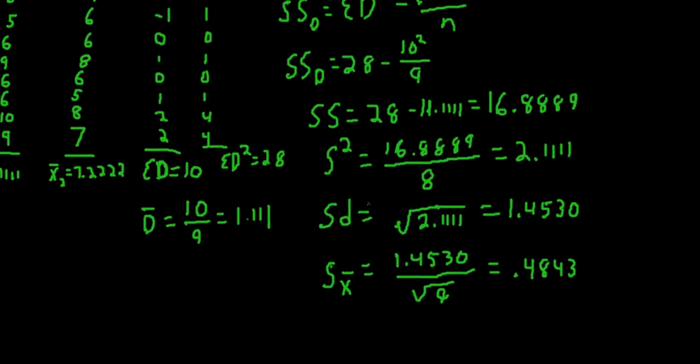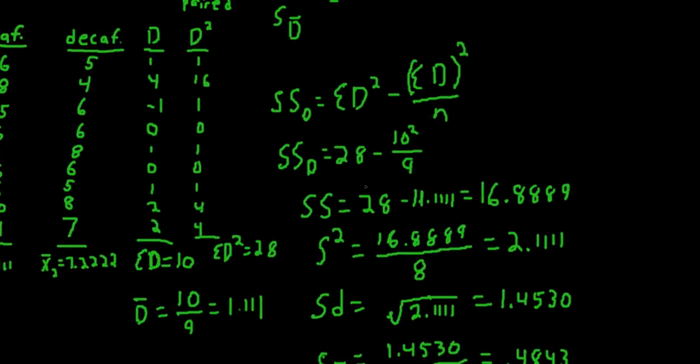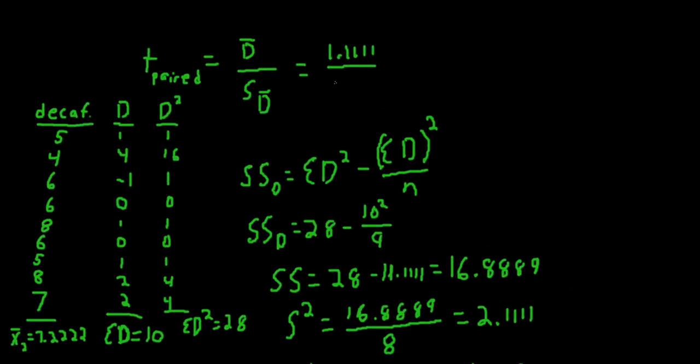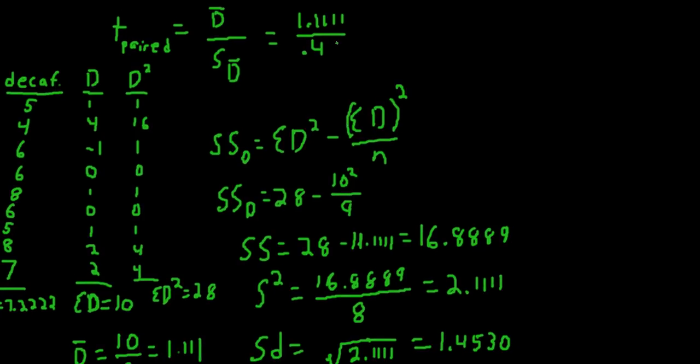which we can plug into the equation above. So we have the top of the equation. And we can now put in the denominator, which is 0.4843. And now we have our T observed, or our T ratio, which is 2.29.